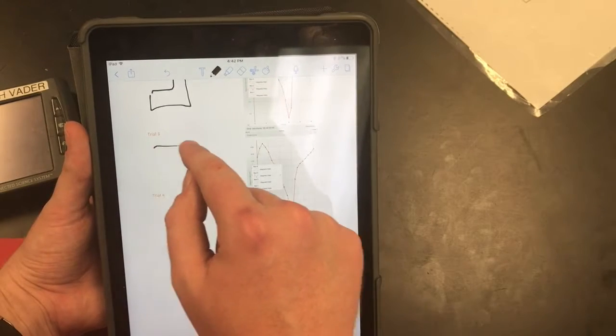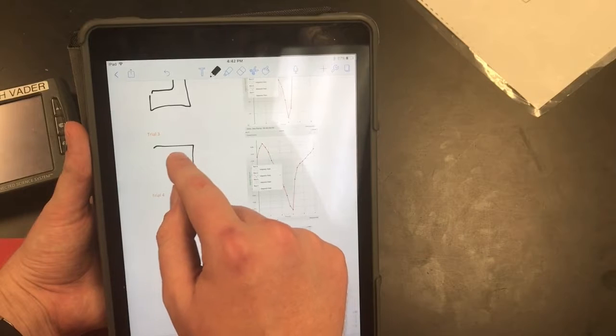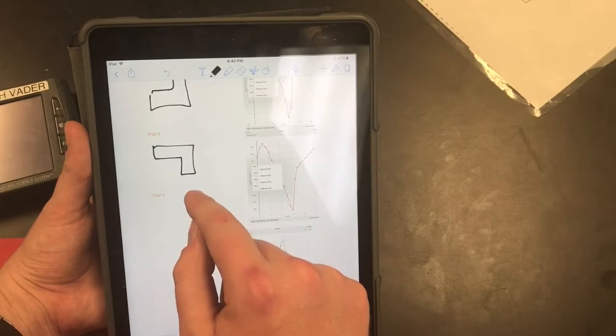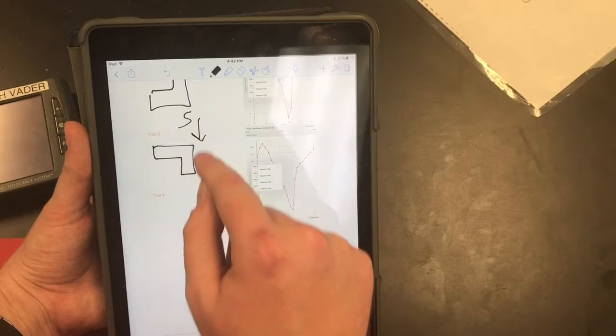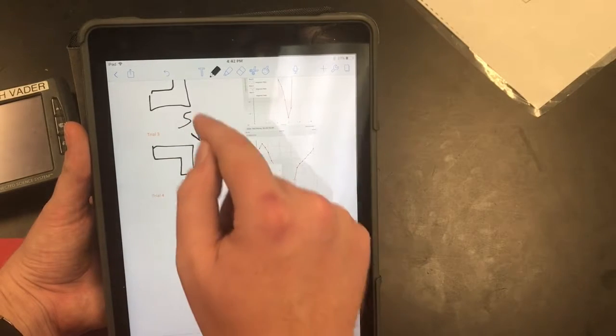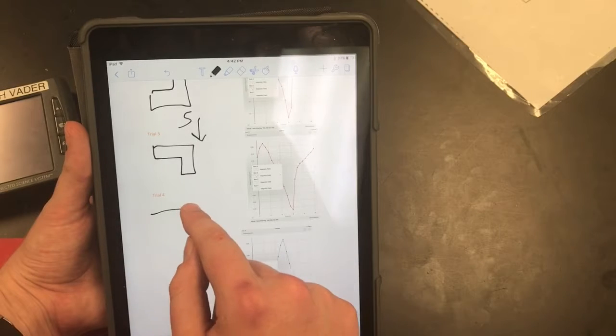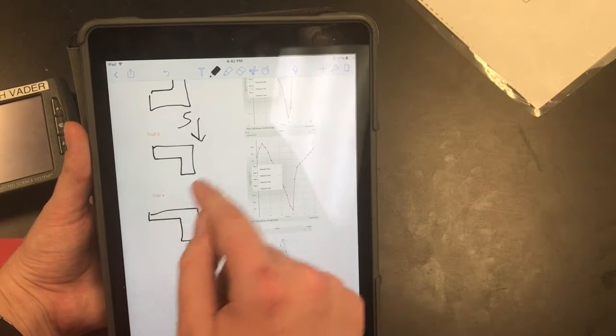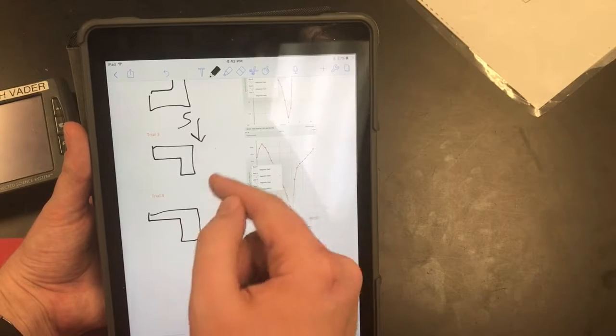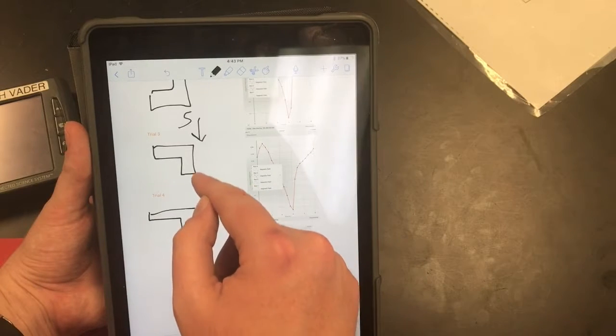Trial three, we flipped it and then we had the south pointing down. So we had the top of the probe down but the south magnet still coming down like that. And for trial four, down again and our north magnet positioned down.